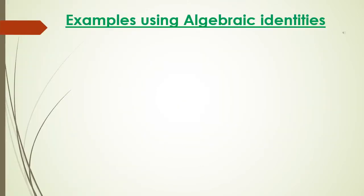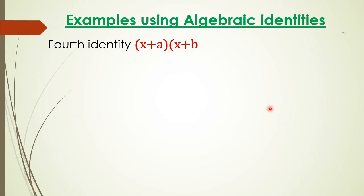I am going to solve some examples by using the fourth identity, that is: (x + a) into (x + b) is equal to x squared plus (a + b) into x plus ab.